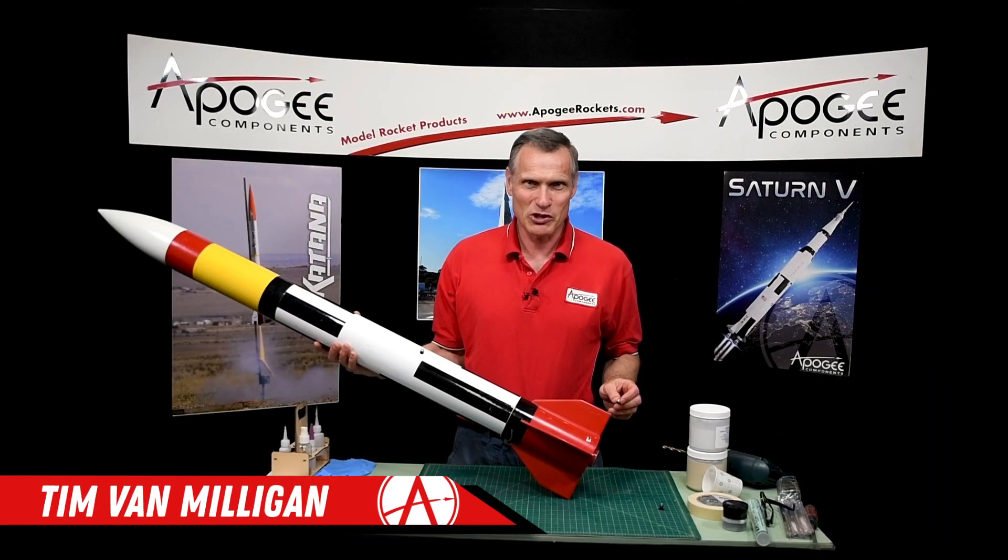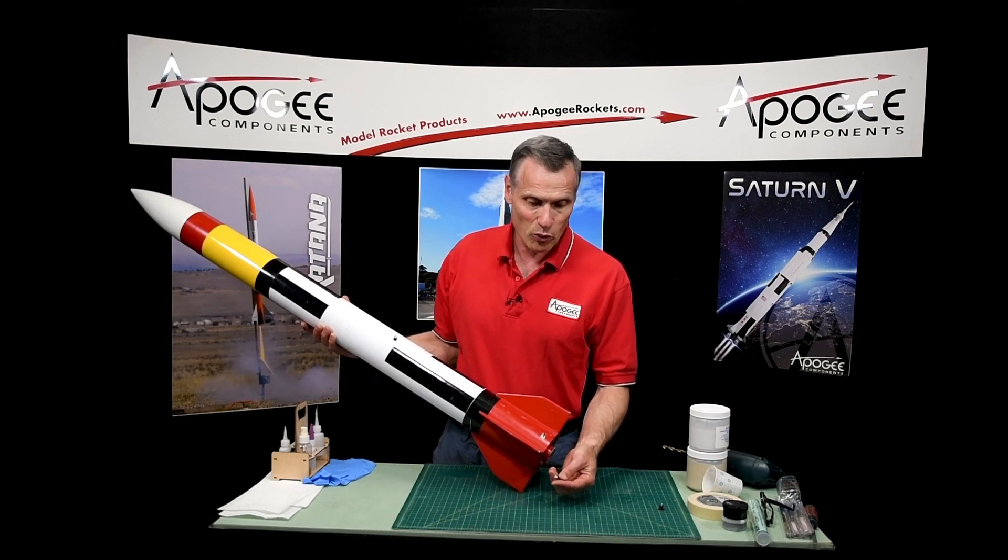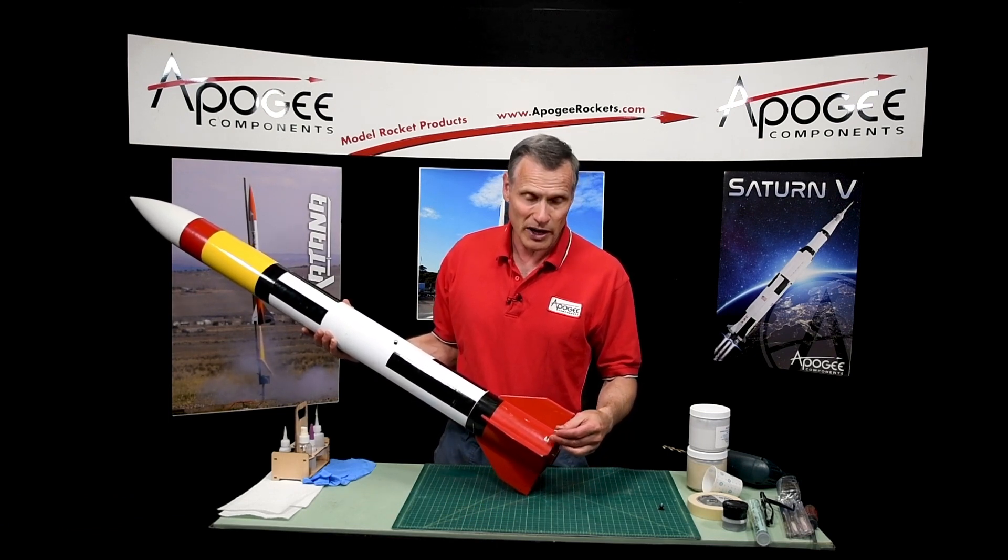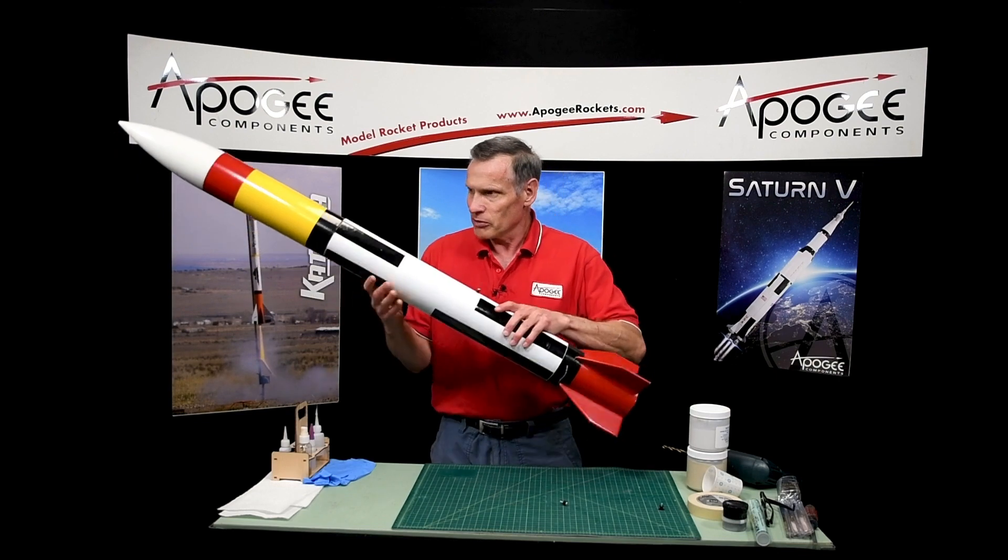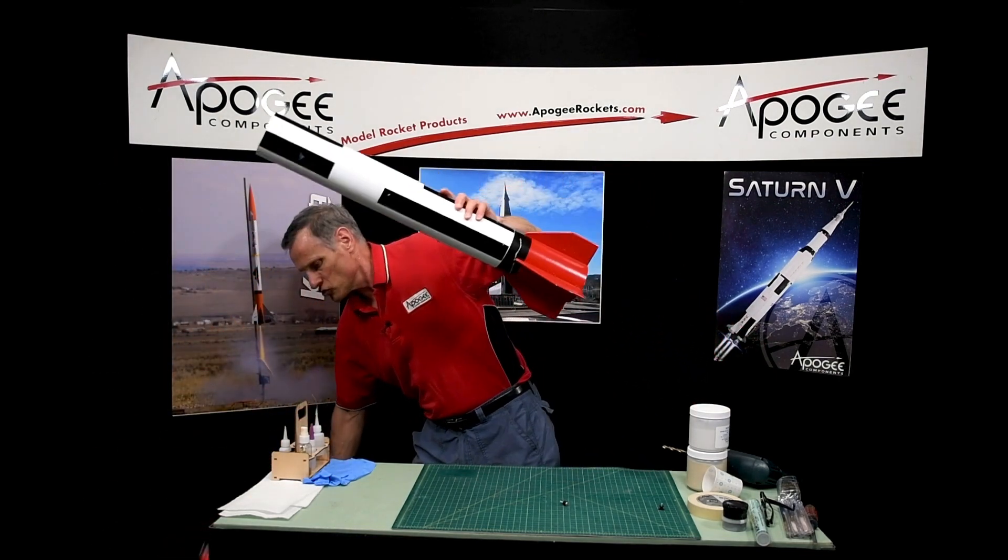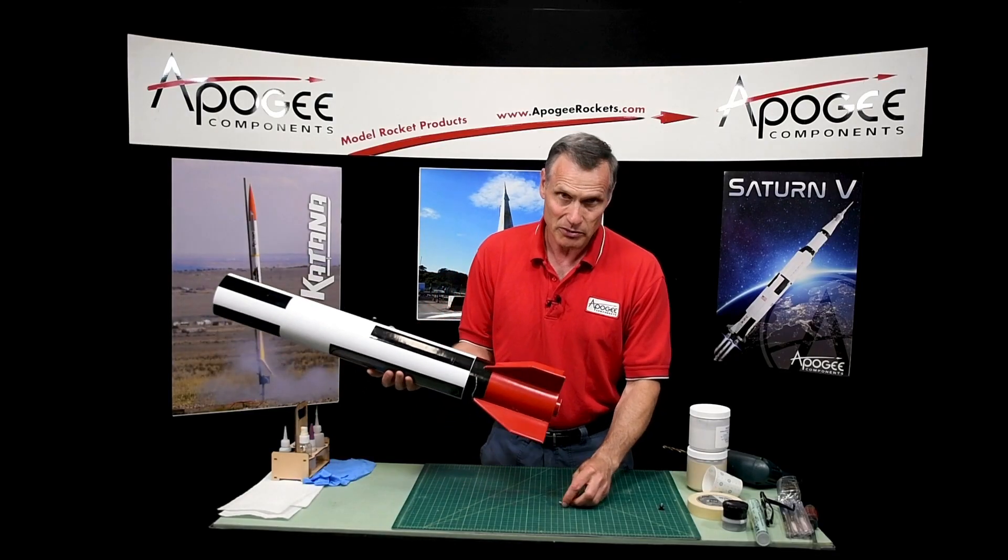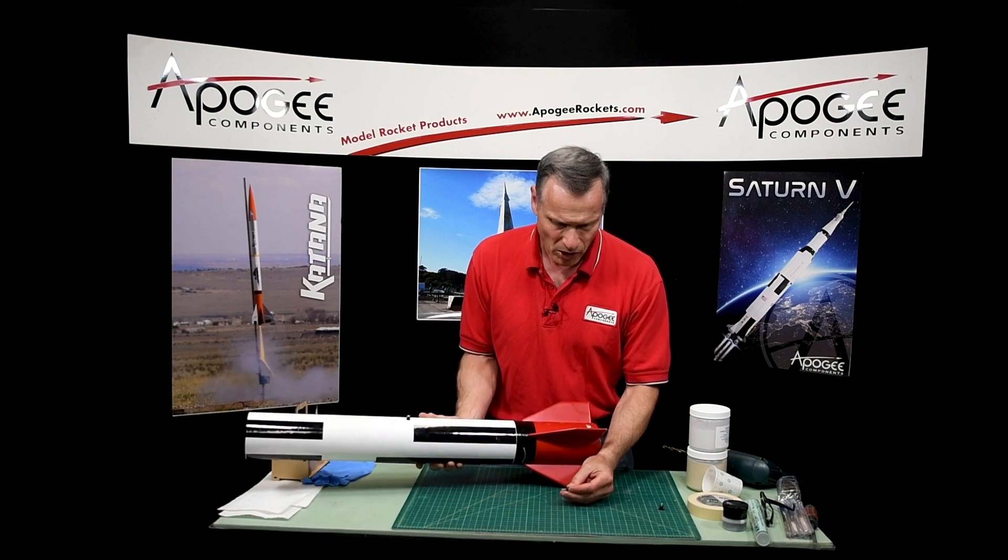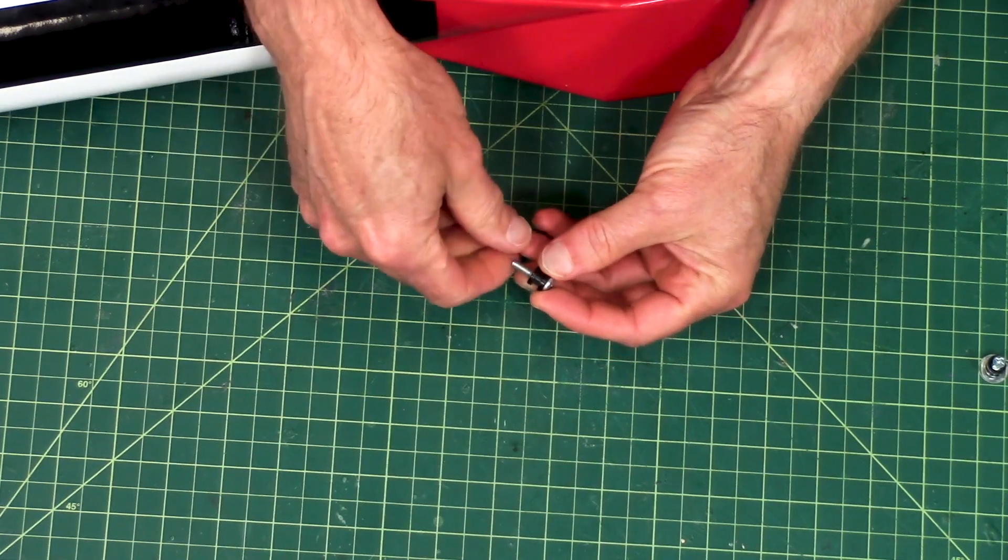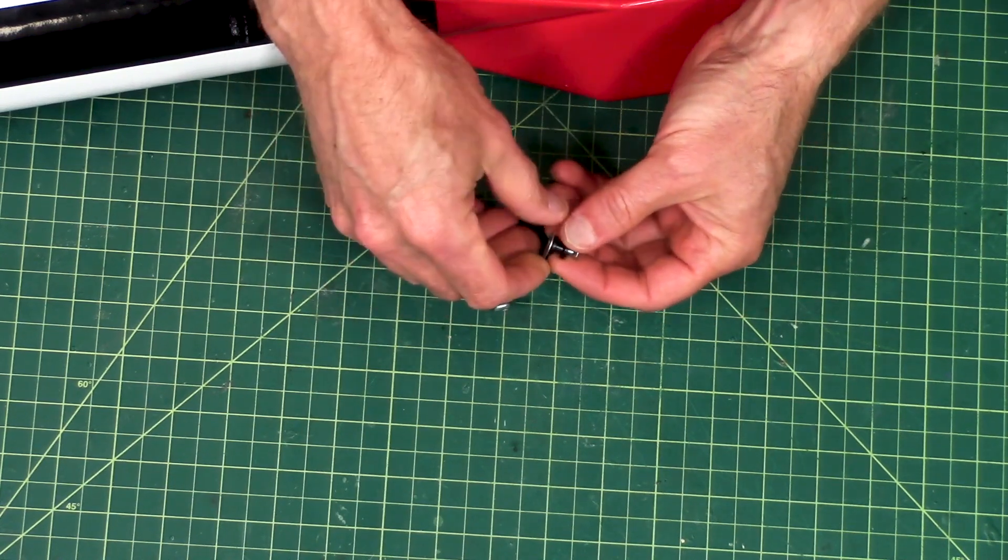Hi, I'm Tim Van Milligan from Apogee Components. Today I want to cover how to fix the problem where the rail button comes out of the rocket. Now let me make this a little bit shorter here by pulling this off so I can show you what's going on. Now on this rocket, this is a Mad Cow kit, a Mad Cow Patriot, and it has these rail buttons here which are a little bit different from the rail buttons that we use at Apogee Components for our kits.